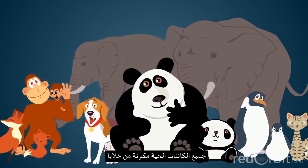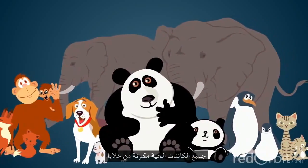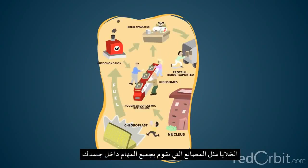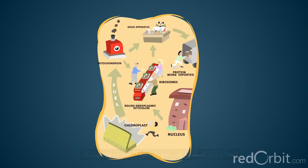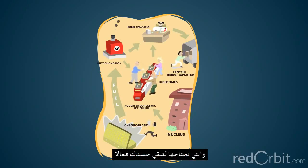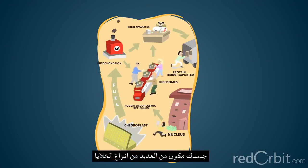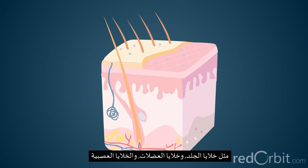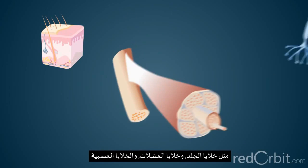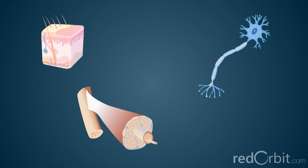All living organisms are composed of cells. Cells work like little factories doing all the jobs inside your body that are needed to keep your body functioning. Your body is made up of many different kinds of cells, such as skin cells, muscle cells, and nerve cells.